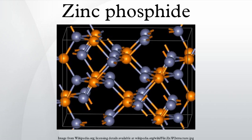Zinc Phosphide is an inorganic chemical compound. It is a gray solid, although commercial samples are often dark or even black. It is used as a rodenticide. ZN3P2 is a semiconductor with a direct band gap of 1.5 eV and may have applications in photovoltaic cells.